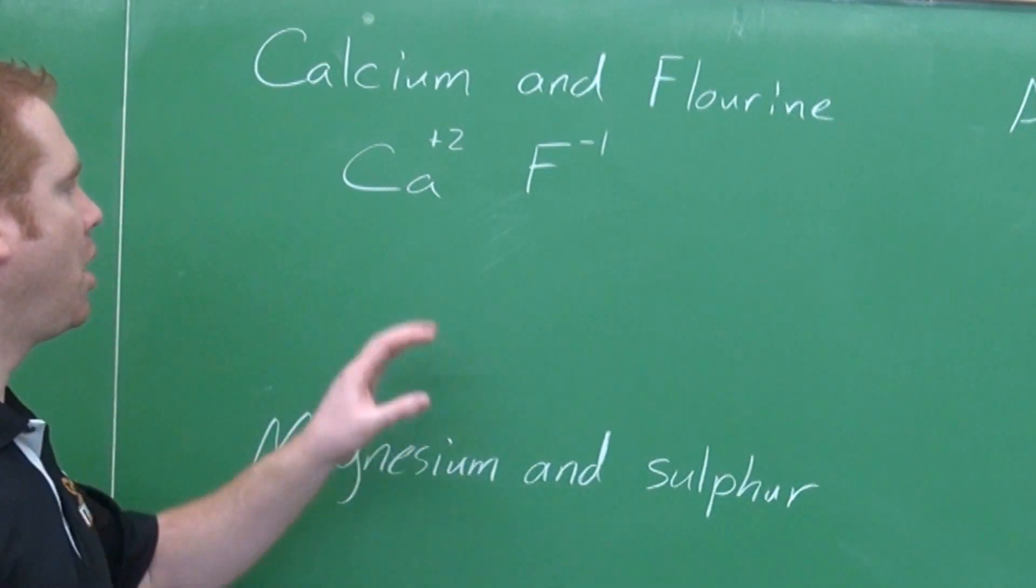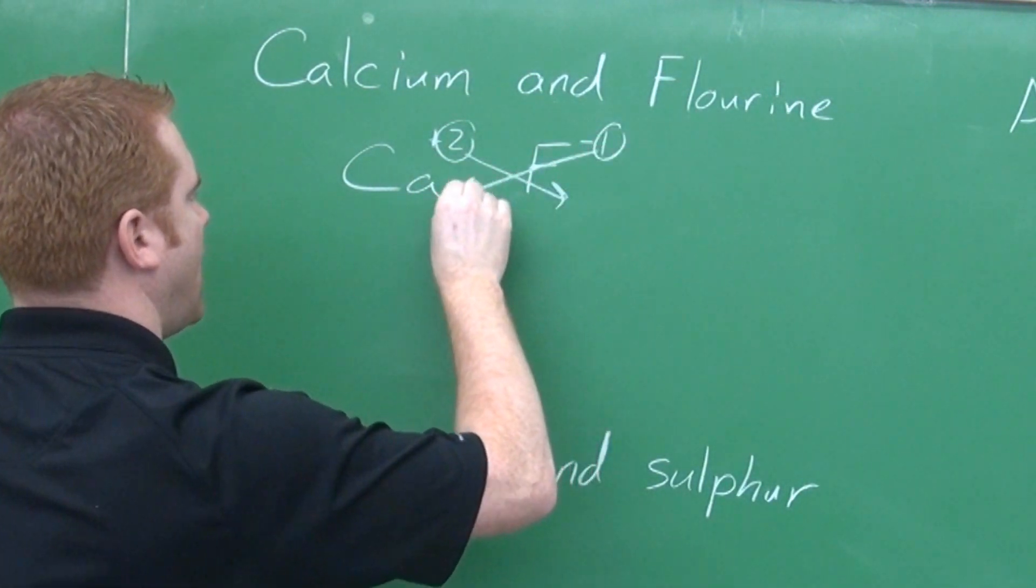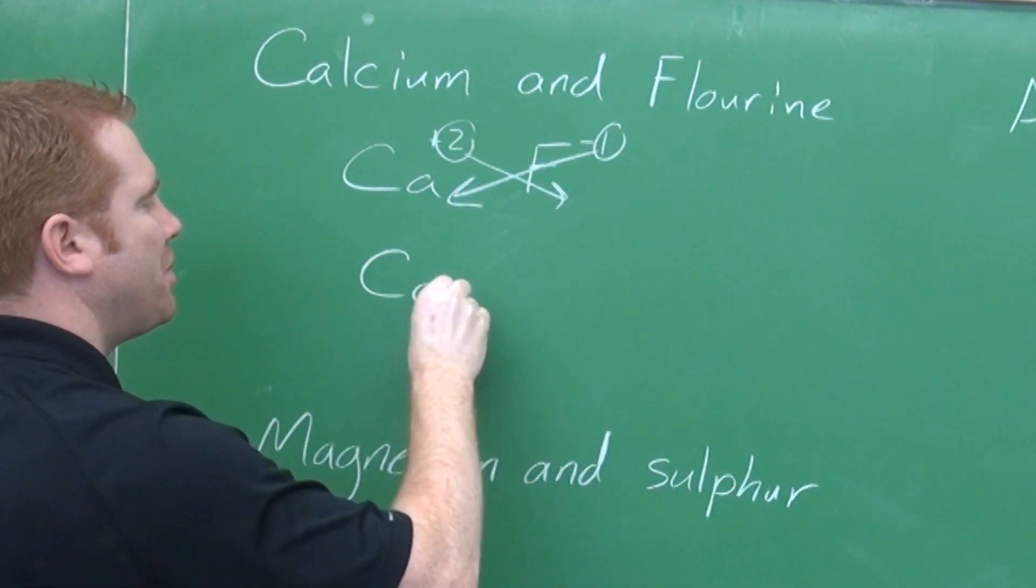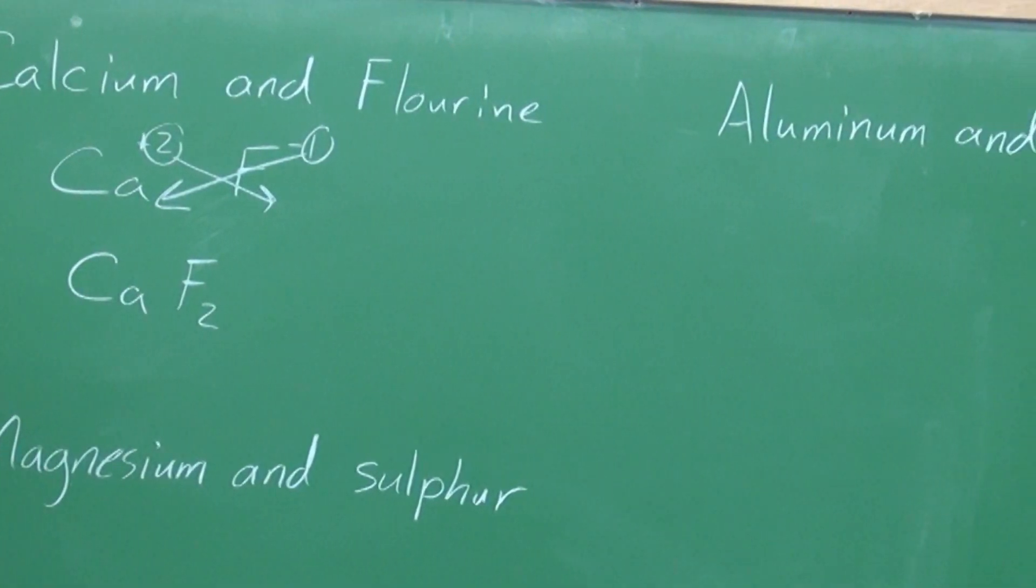What do we do now? We ignore the charges and we crisscross. The two comes down, the one comes down. Ca, I don't need to put the one in there, F2. And there we go.